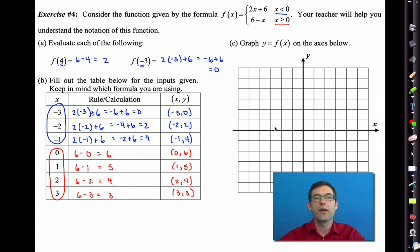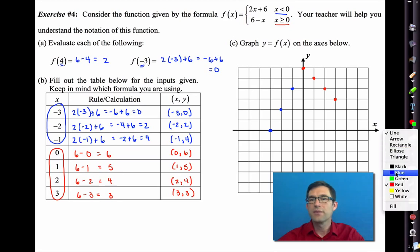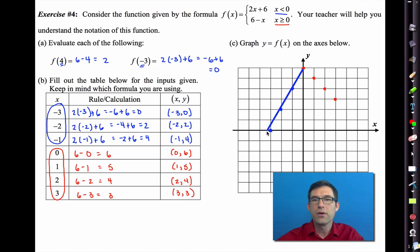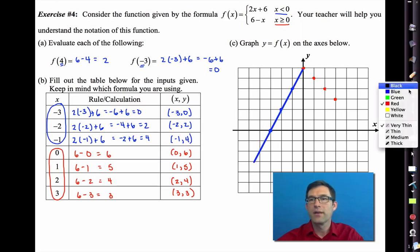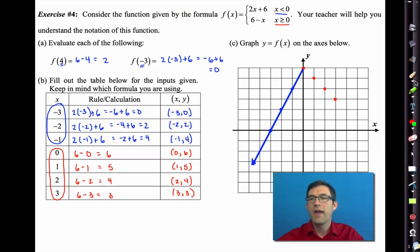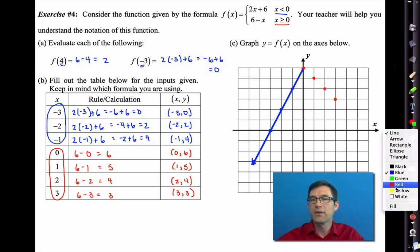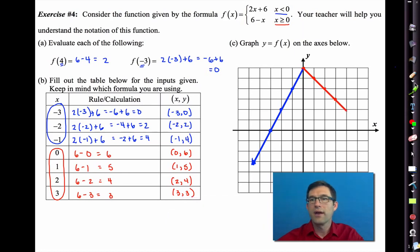I'm going to go back to blue and let's start plotting. Negative 3 comma 0 would be right there. Negative 2 comma 2 right there. Negative 1 comma 4 would be right there. Now I'm going to go back to red. 0 comma 6 would be right here. 1 comma 5 right there. 2 comma 4 would be right there. And 3 comma 3 would be right there. So let me do something really quick. Let's go with blue here. Blue is going to be everywhere here. Let me throw a little arrow on there. And red here is going to be right here. And again, little arrow.